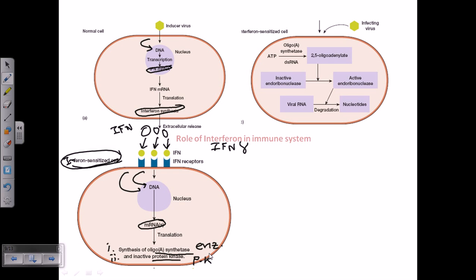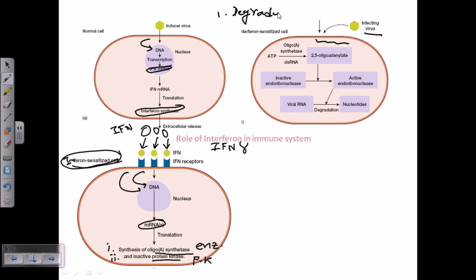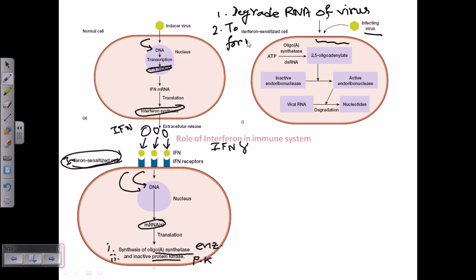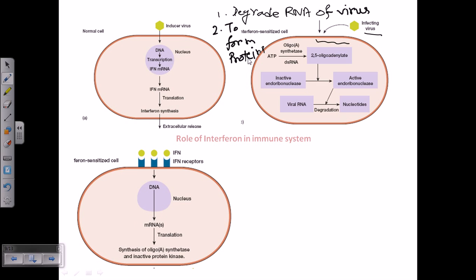Once these two enzymes are produced, if a virus again infects the interferon-sensitized cell, the cell has two ways to kill it. The first way is to degrade the RNA of the virus. The second way is to prevent the virus from forming new proteins. Both mechanisms together prevent the virus from successfully infecting the cell.